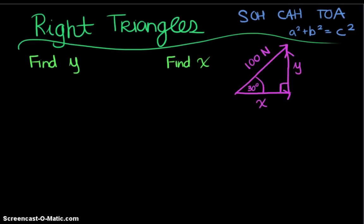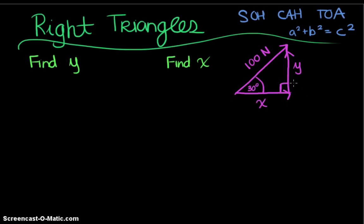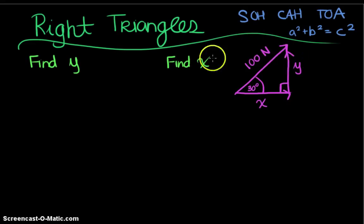In the next example, we have a couple of vectors. We have a 100-Newton arrow at 30 degrees above the x-axis. The y component is upward and the x component is going to the right, and together they form a right triangle. The unit Newtons is used for force — so this could be somebody pulling a wagon or hitting a volleyball at an angle. We're asked to find both missing sides x and y.